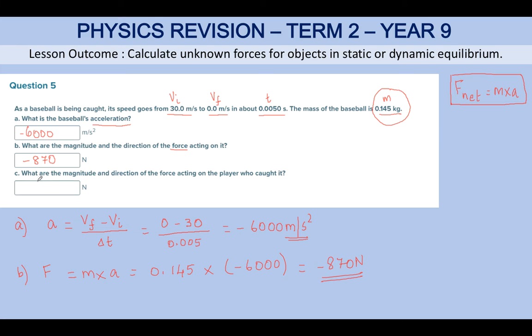Now for Part C: what are the magnitude and direction of the force acting on the player who caught it? The magnitude of the force is without the direction—870 N.